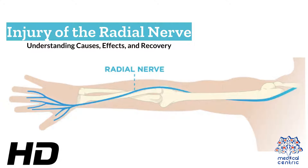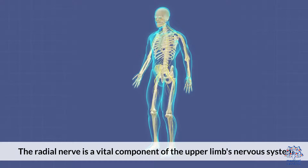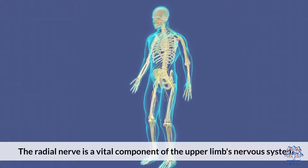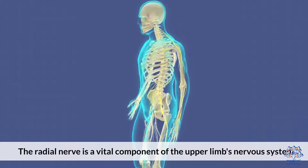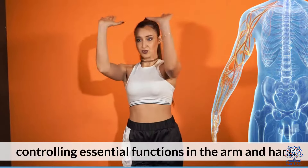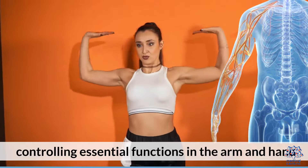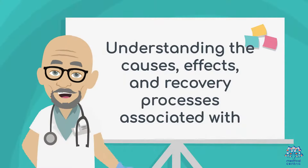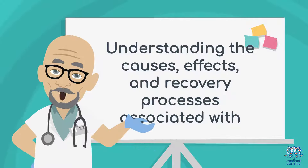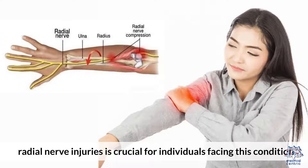Today's medical-centric topic is Injury of the Radial Nerve – Understanding Causes, Effects, and Recovery. The radial nerve is a vital component of the upper limb's nervous system, controlling essential functions in the arm and hand. Understanding the causes, effects, and recovery processes associated with radial nerve injuries is crucial for individuals facing this condition.